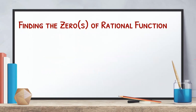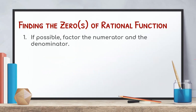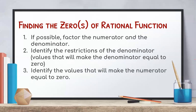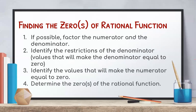These are the steps in finding the zeros of rational functions. First, if possible, factor the numerator and the denominator. Second, identify the restrictions of the denominator — values that will make the denominator equal to zero. Third, identify the values that will make the numerator equal to zero. And finally, determine the zero or zeros of the rational function.